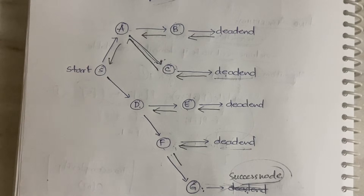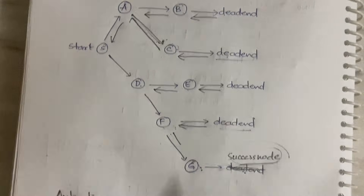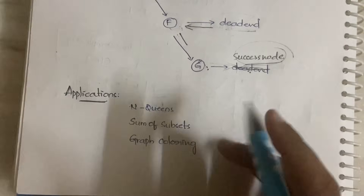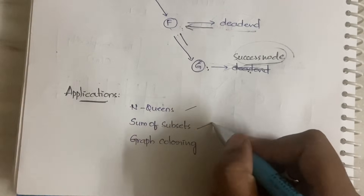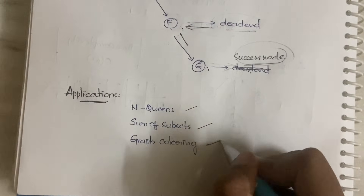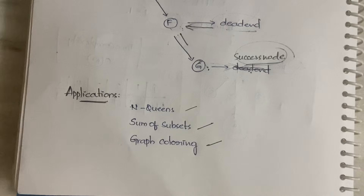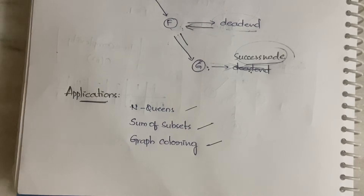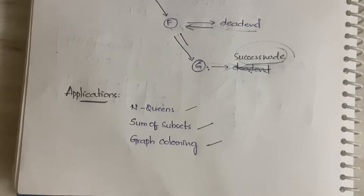We have three applications for backtracking: N Queens, Sum of Subsets, and Graph Coloring. There are more, but according to the JNTU H syllabus we cover only these three. I will be explaining these three algorithms in the next coming videos. Thanks for watching — if you have any doubts, let me know in the comment section. See you in the next video.